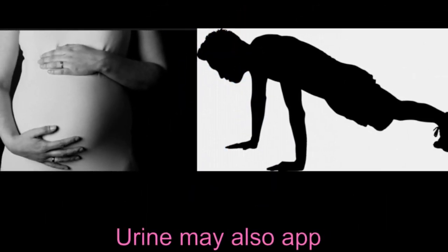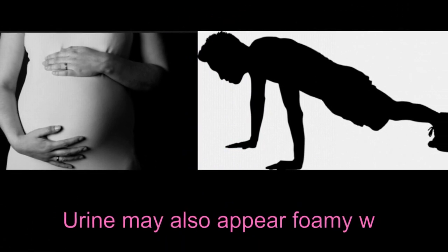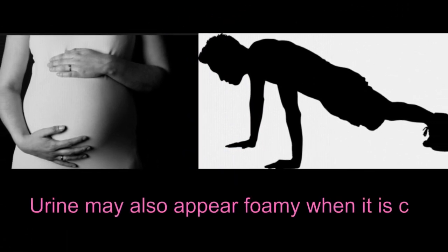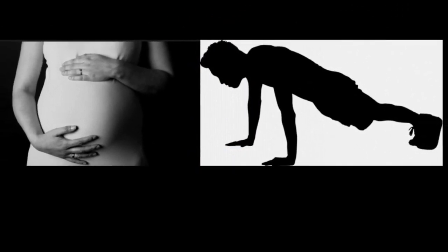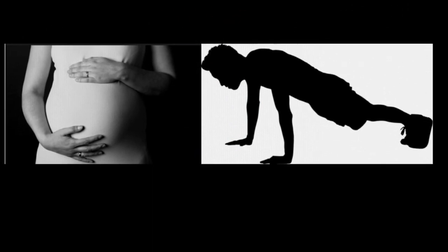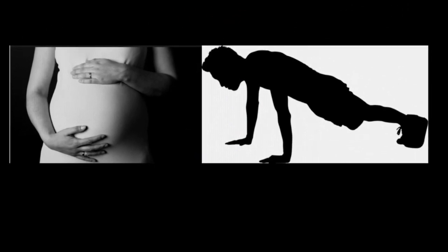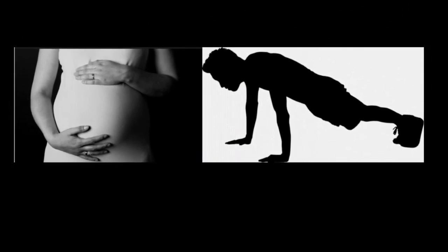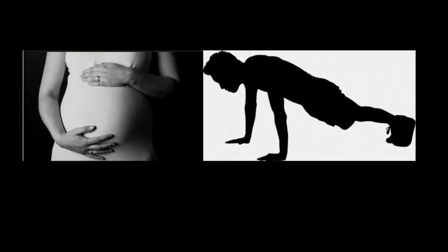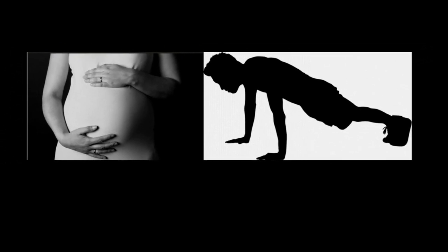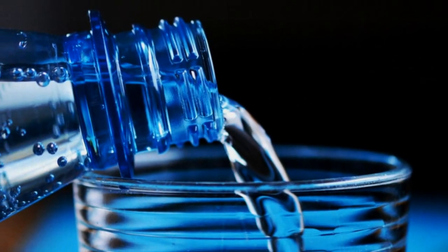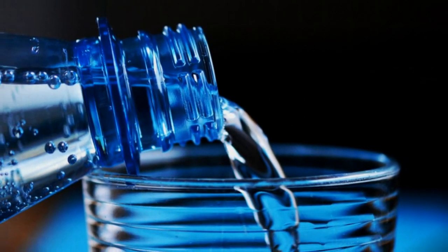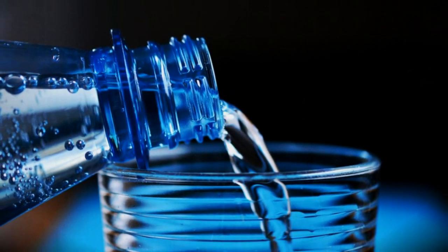Urine may also appear foamy when it is concentrated. During pregnancy or while exercising, an individual may have mild dehydration, which makes the urine darker and concentrated, and this may result in a foamy appearance. Try to rehydrate and take fluids to prevent this problem. When you restore fluid balance, your urine will assume its pale yellow color.